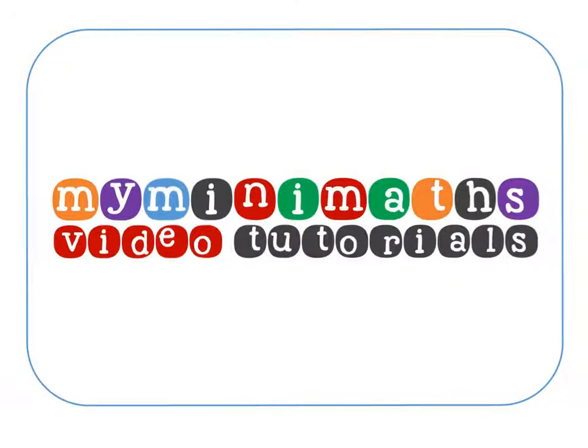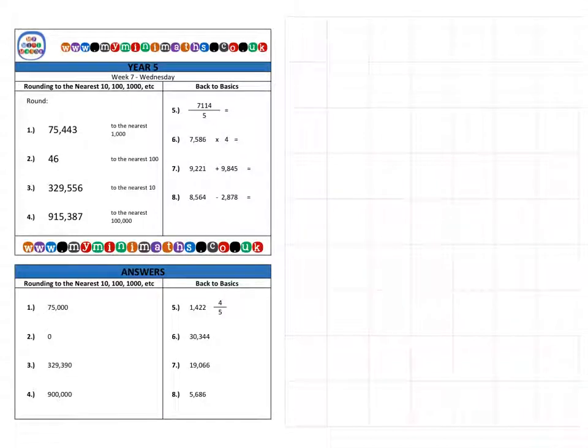Hello and welcome to MyMiniMaths.co.uk video tutorials. Today we're going to be looking at rounding numbers to the nearest 10, 100, 1,000 and 100,000. We have previously looked at different approaches and techniques that we can use to round numbers up or down. If you need to refresh on those different types of approaches and methods, go back to Monday's video tutorial. First of all, on to question one.